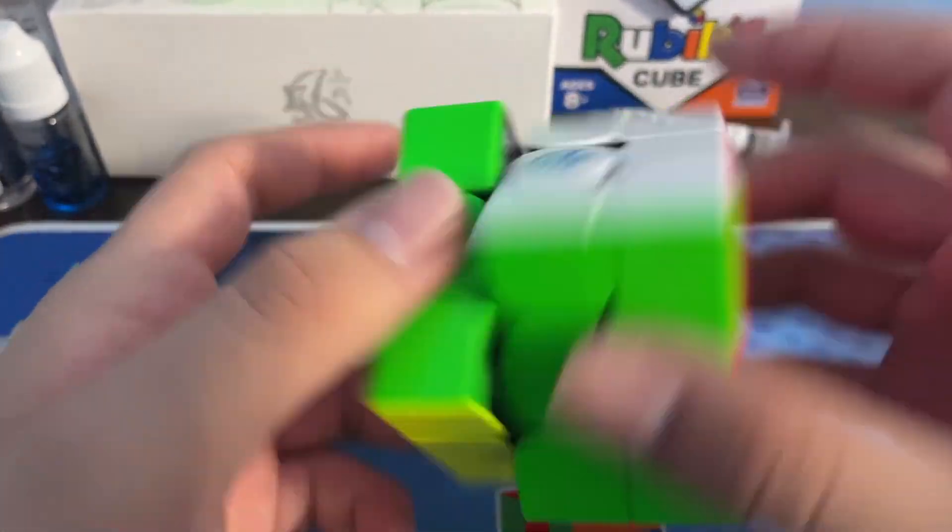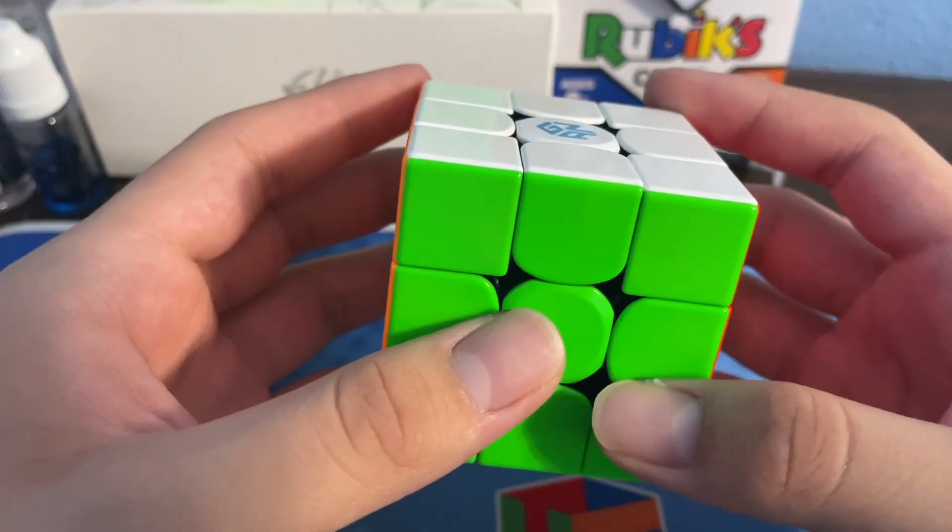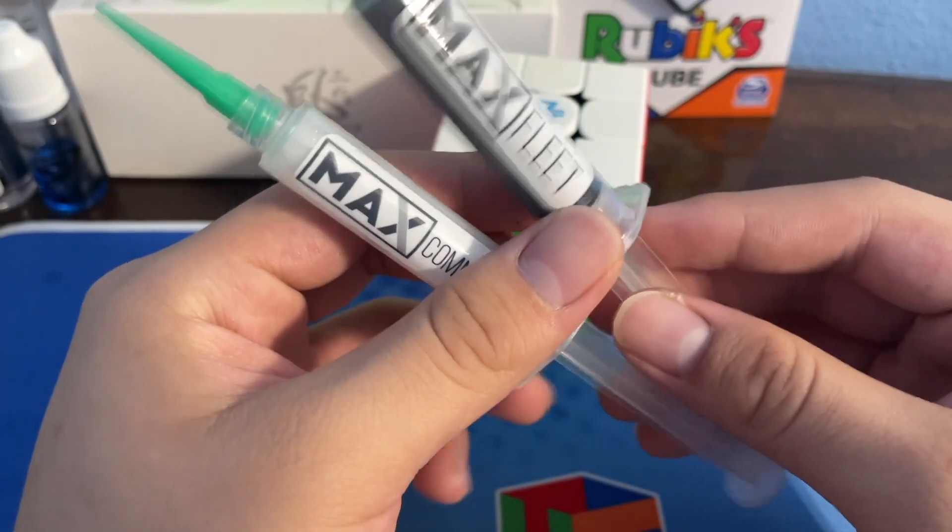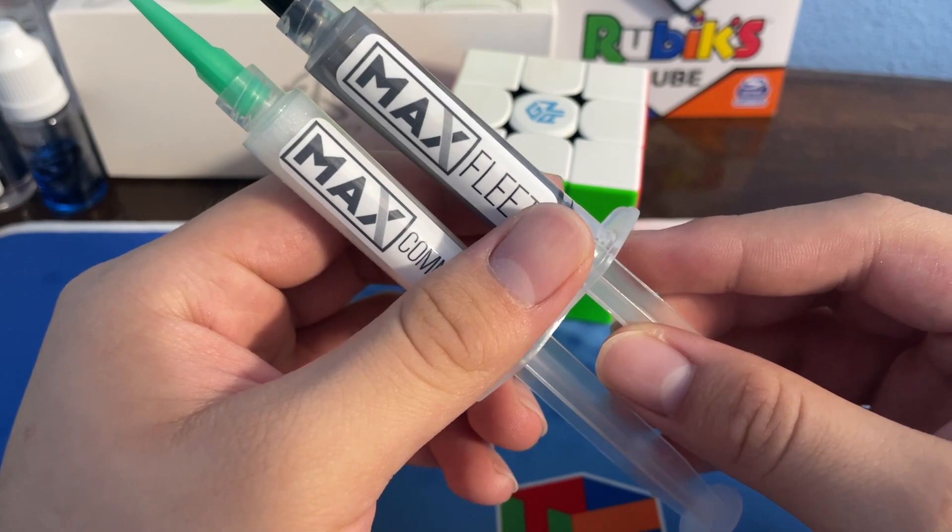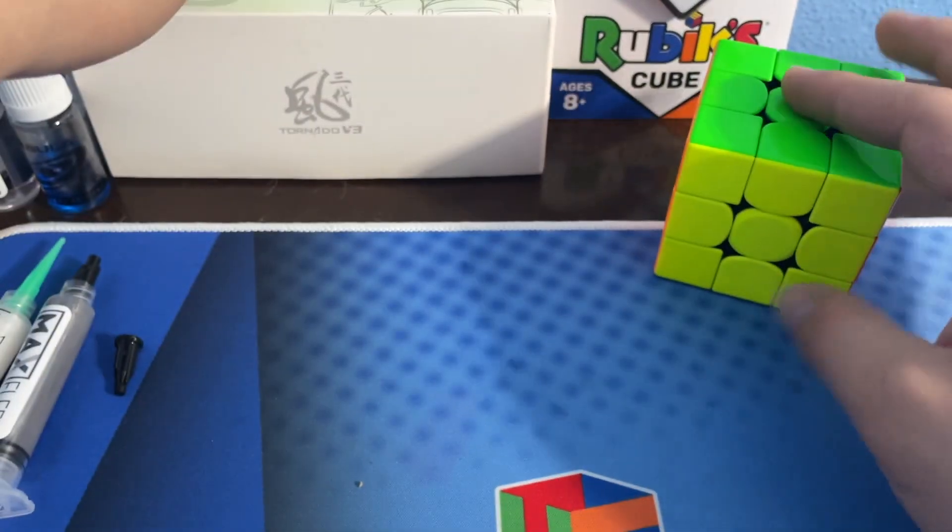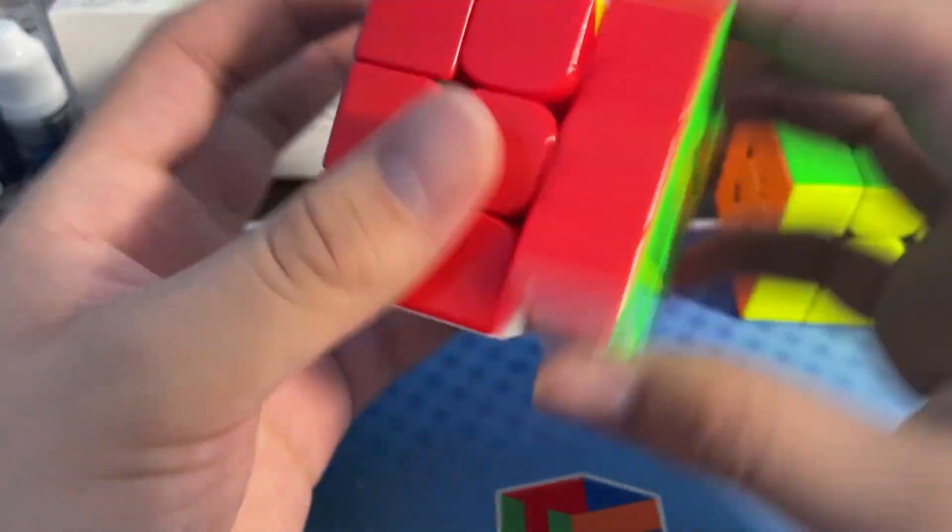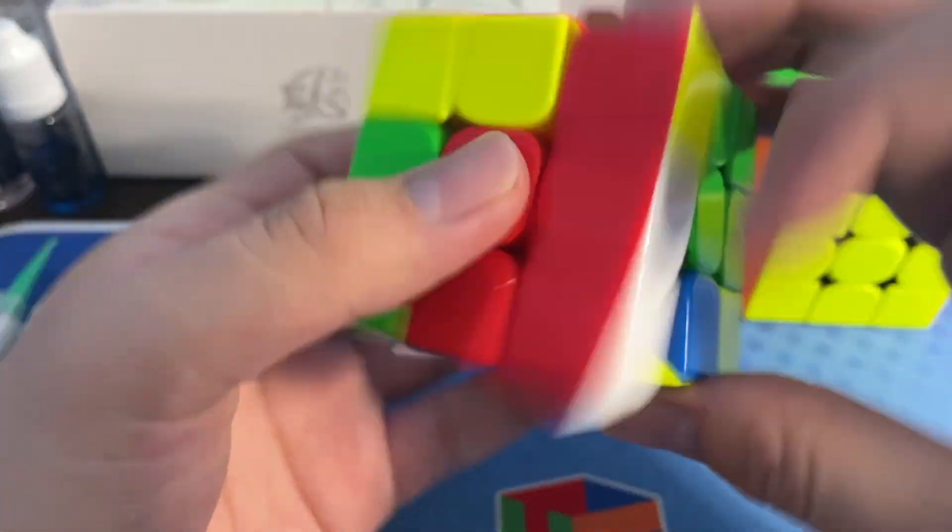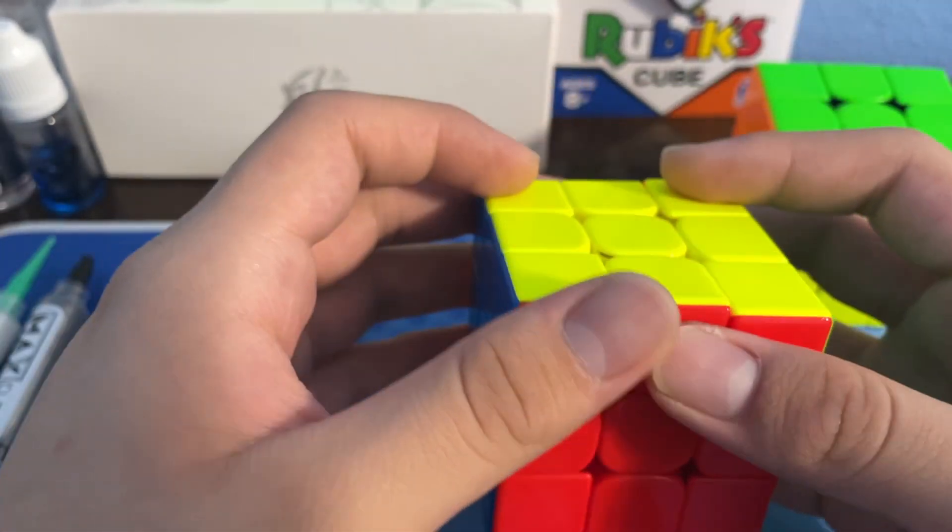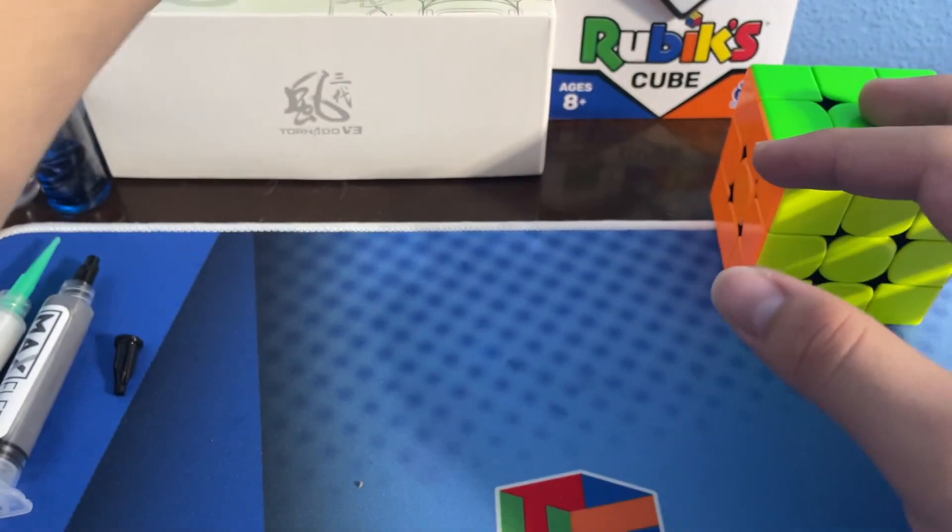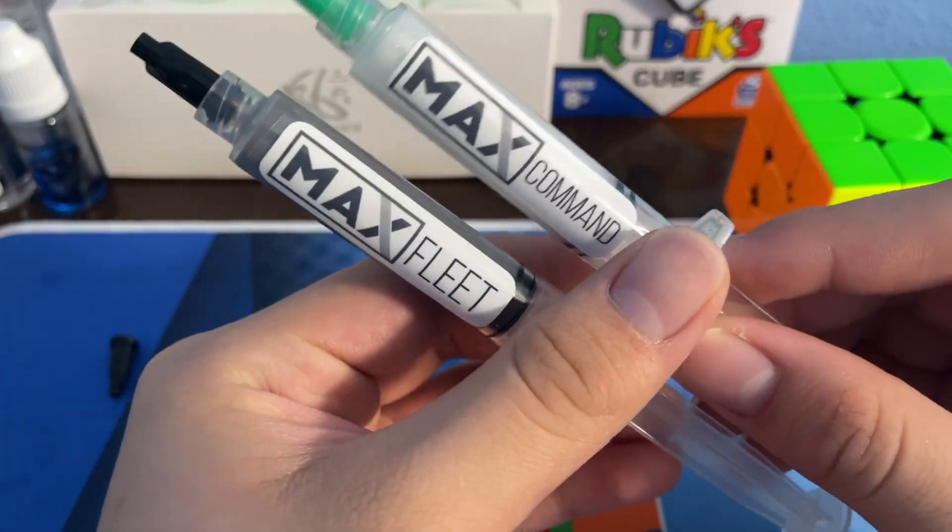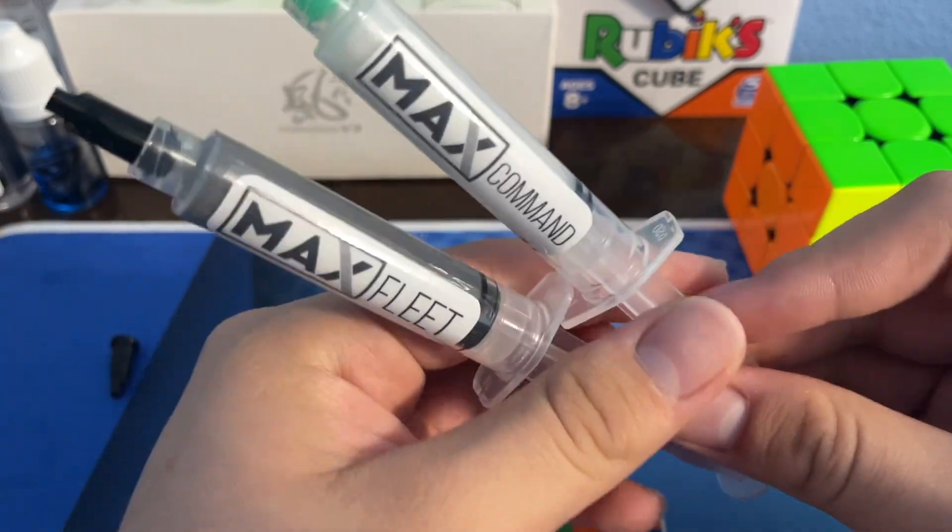But dang, these lubes are just super fast. Unless you have super accurate turning, I don't think these lubes are it. But if you do have super accurate turning, or you really just want to speed up a slow cube like the RS3M 2020, which is not very quick but there are many more ways of speeding it up, but if you want to go for that extra max speed, I'd recommend both of these lubes.